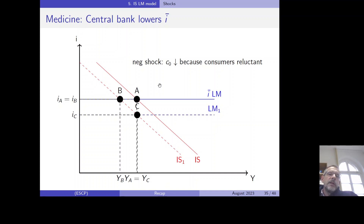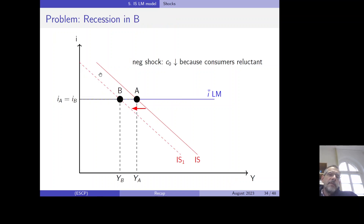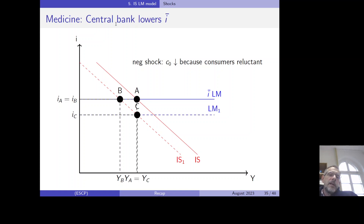To summarize: first, a negative goods demand shock shifts the IS curve to the left and the economy enters a recession. Then the central bank applies the right amount of monetary stimulus — lowering the interest rate by just enough — so that GDP recovers to its original level.